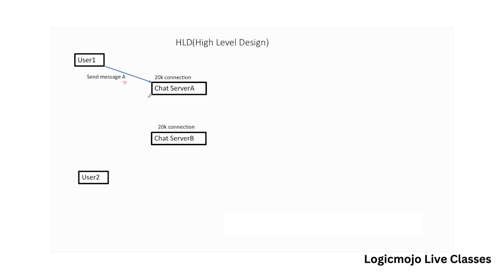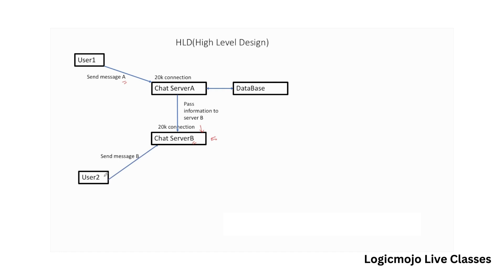As soon as chat server A gets the message from user 1, it processes that message — it figures out which is the destination user for message A. First, it stores that information into a database, and then it searches for the chat server connected to the destination user, which is user 2. It finds that chat server B is the desired destination. Meanwhile, user 2 also sends a message — let's call it message B — to chat server B, which then sends that message to chat server A, since chat server A is connected to user 1.